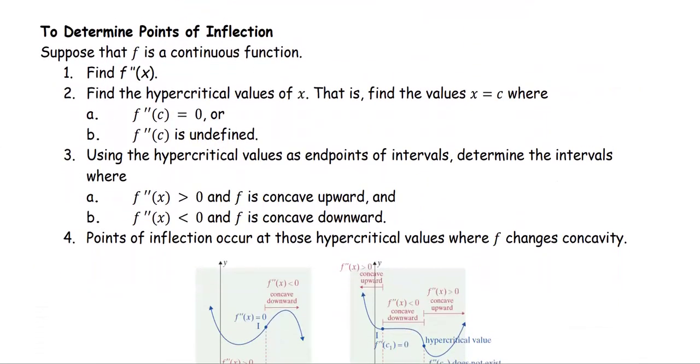To determine points of inflection, we use the short term EPOI. First, specify the second derivative, and then determine the hypercritical value by finding the x when f double prime equals 0 or f double prime is undefined.